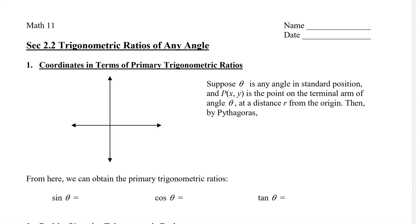In this video, I'm going to show you how to find the trigonometric ratio of an angle given different scenarios. To begin, suppose that theta is any angle in standard position, and the point P(x, y) is on the terminal arm of the angle theta.